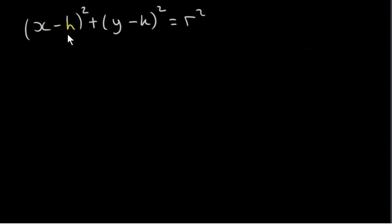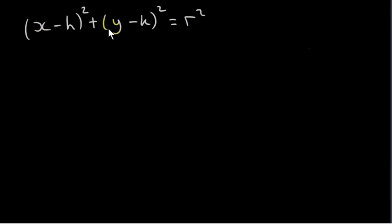In the first video in this playlist, we derived the general equation of a circle with center h, k and radius r. We used Pythagoras' theorem to find a relation between x and y, where x, y is any point on the circle. In this video, we're going to expand this out so we can write this in a different form — basically an expanded form, so we just square this out.